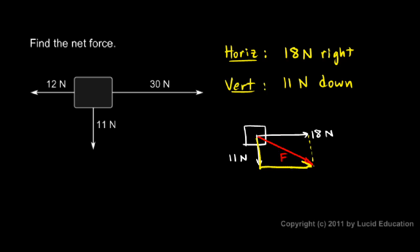So if I look just at this triangle, I have 11 and 18 for the legs, and so I can find the hypotenuse.